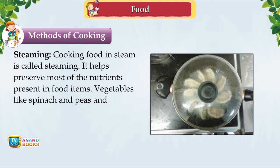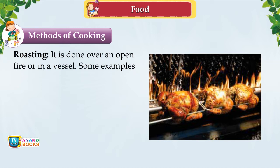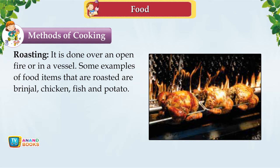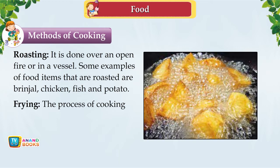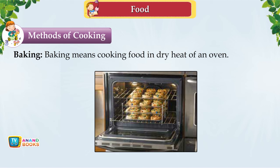Roasting is done over an open fire or in a vessel. Examples include brinjal, chicken, fish and potato. Frying is the process of cooking food in hot oil or ghee — puris, samosas and jalebis are fried foods. Baking means cooking food in the dry heat of an oven. Cakes, buns, breads, biscuits and pizza are baked foods.